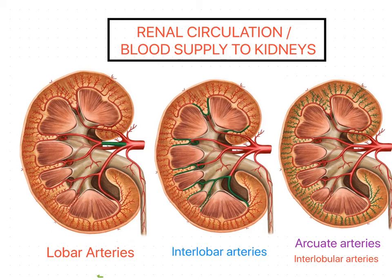The renal medulla is made up of pyramids. The apices of these pyramids open into the minor calyx, which is a division of the major calyx. The major calyx is a division of the renal pelvis, which is the expanded part of the ureter.